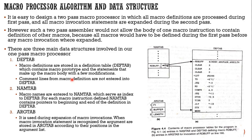There are three main data structures involved in our one-pass macro processor: DEFTAB, NAMTAB, and ARGTAB. DEFTAB means macro definition table, NAMTAB means macro name table which contains the name of the macro, and ARGTAB is the argument table which contains macro arguments.